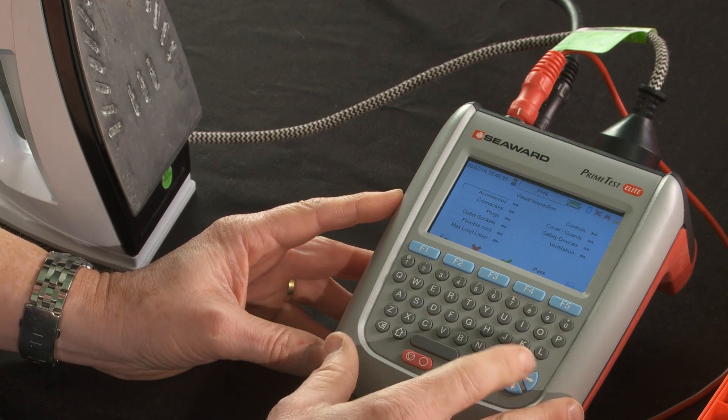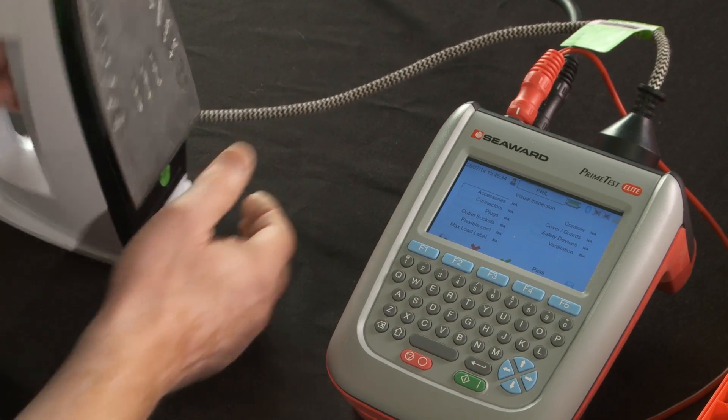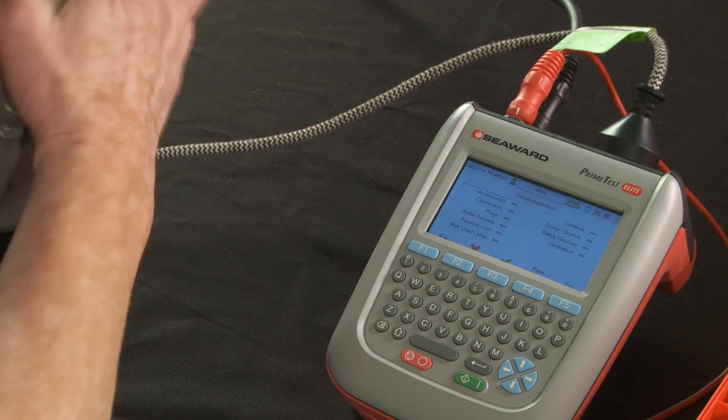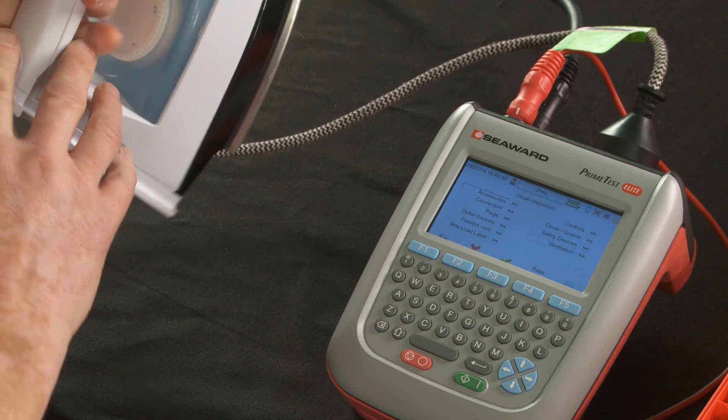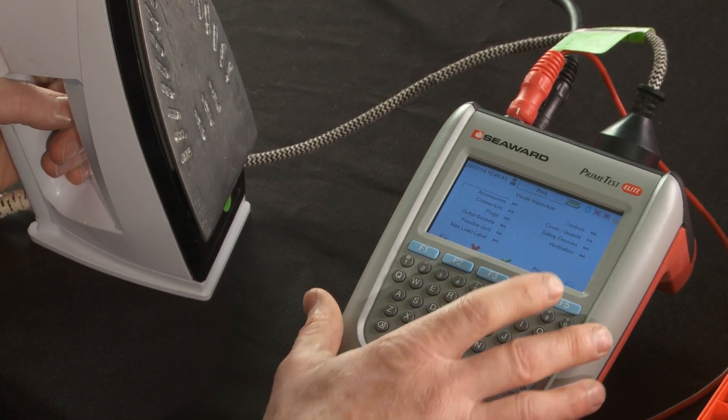First part of the test is the visual, so we've run through the visual, check that the lead's okay, that it's got its labelling on, there's no damage, all the controls are okay. And we push pass all.